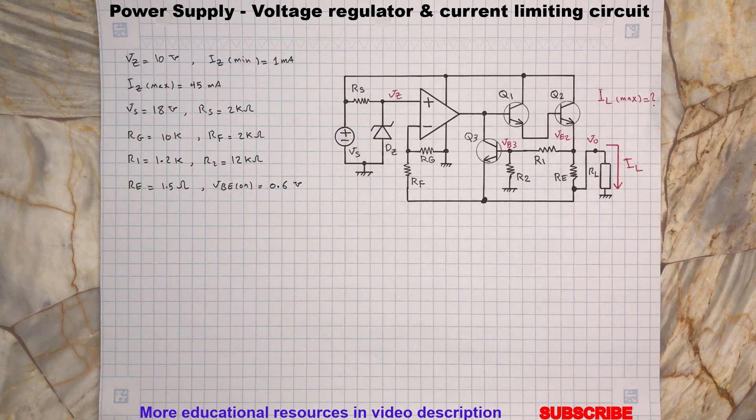Transistors Q1 and Q2 are configured as Darlington pairs and are responsible for providing the output current.